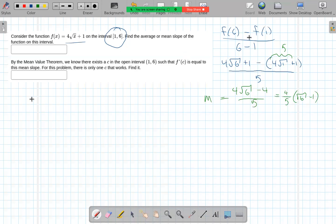So we need to next find f prime of x. Derivative of a square root is 1 over twice the square root. Hopefully that's in your memory bank, and we have 4 times that, and derivative of 1 is 0. So we get 2 over the square root of x.